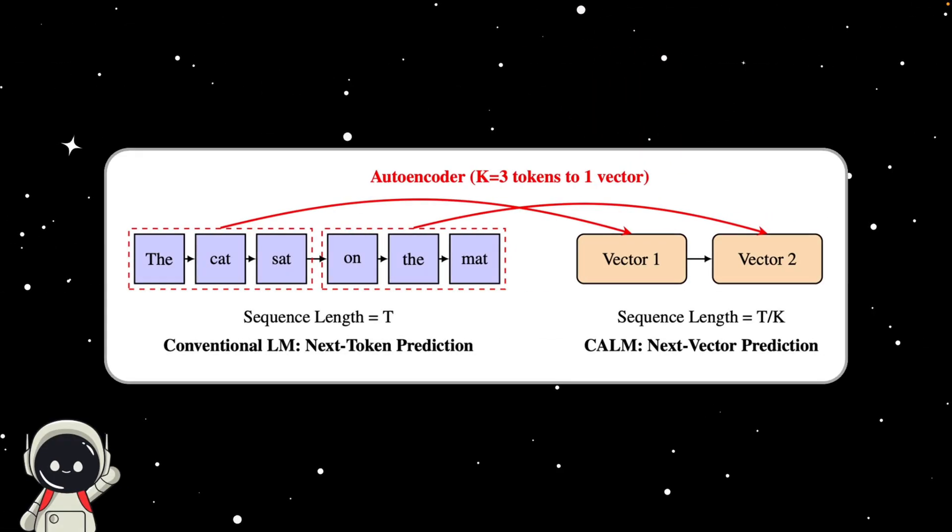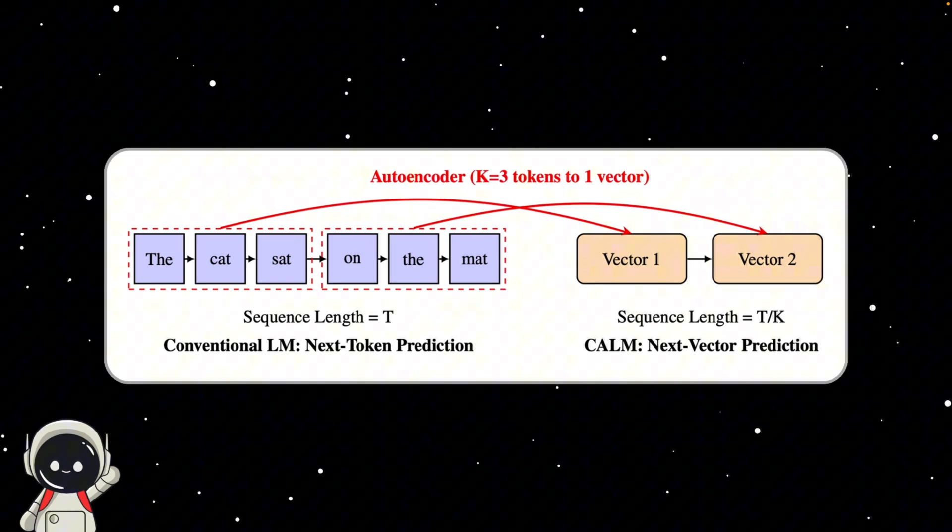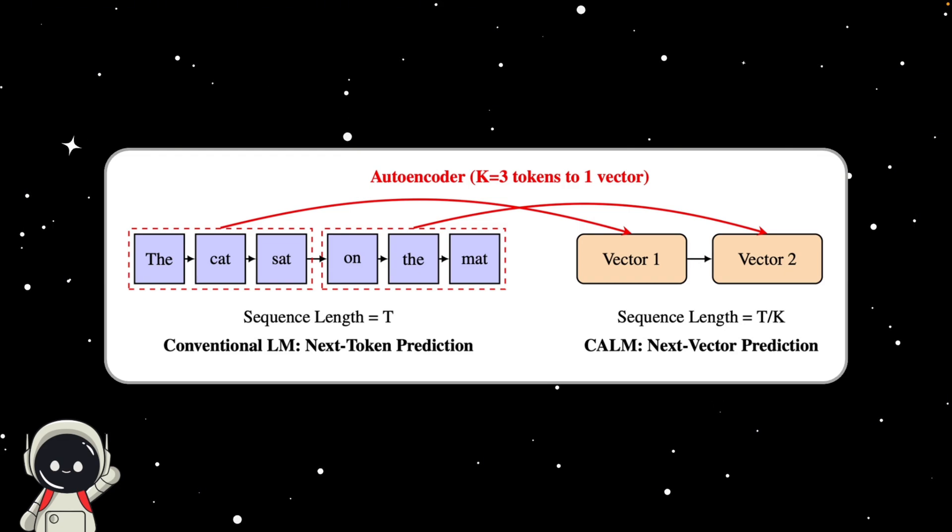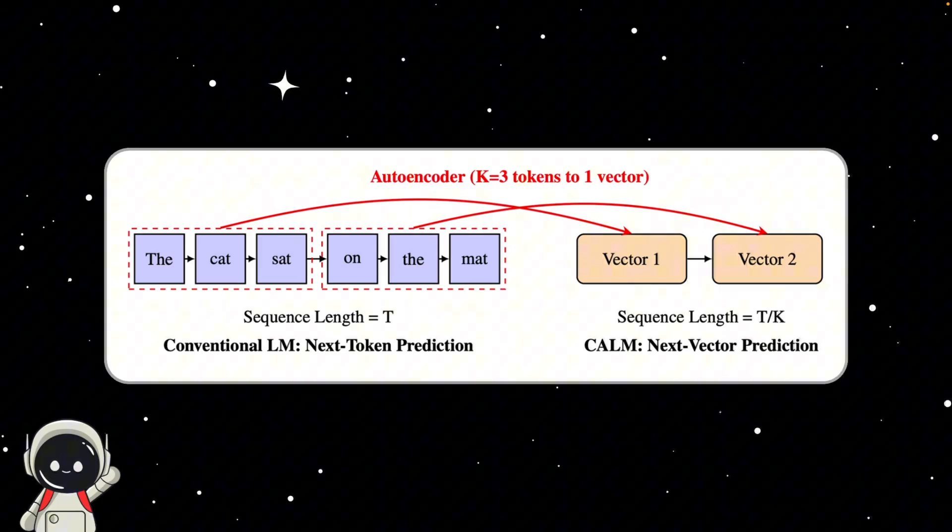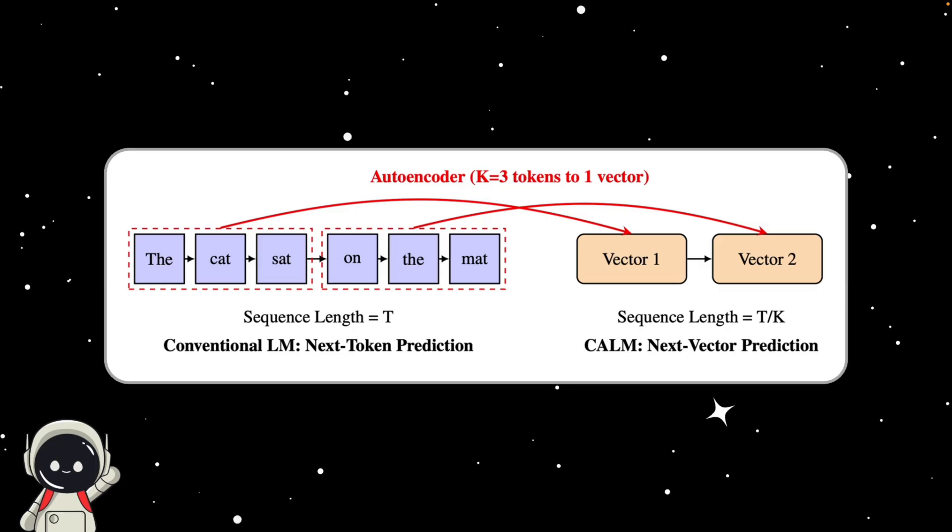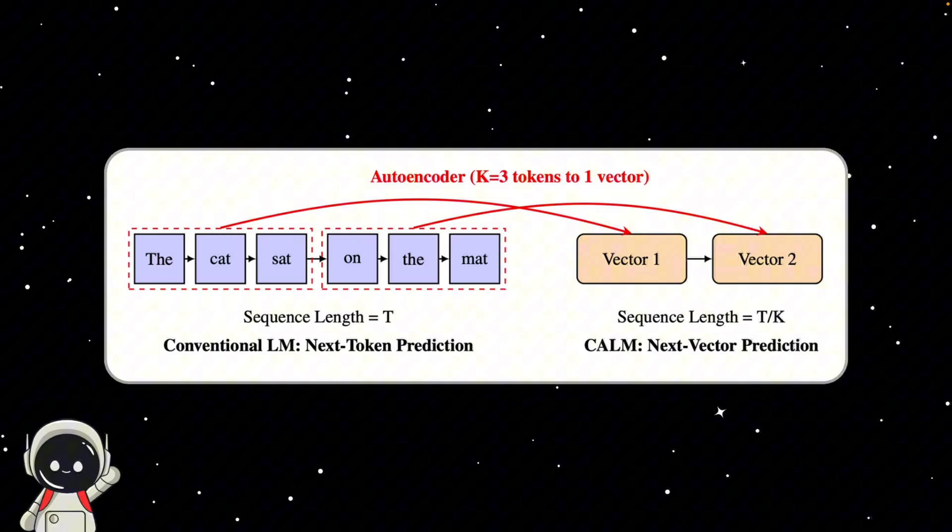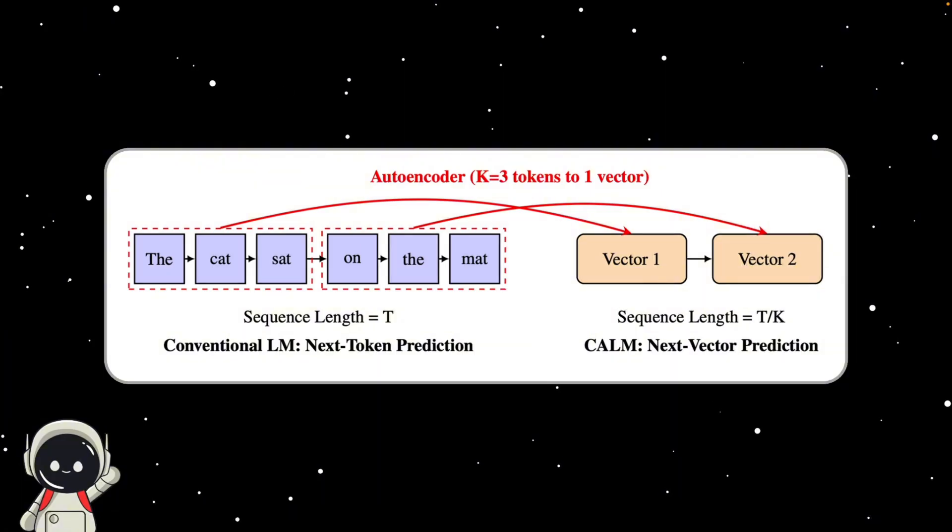So here's the big idea behind CALM. If predicting one word at a time is the bottleneck, why not predict bigger chunks of meaning all at once? Instead of generating discrete tokens, those little bits of text, CALM predicts continuous vectors. You can think of a vector like a smooth, high-resolution picture of meaning. Imagine taking a simple phrase like, the cat sat on the mat, and then squeezing it into a single mathematical signal that captures this entire idea.